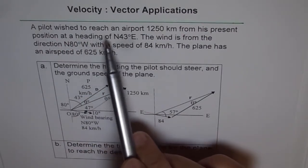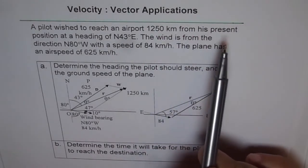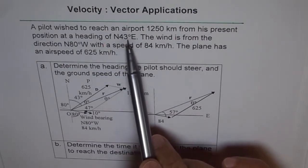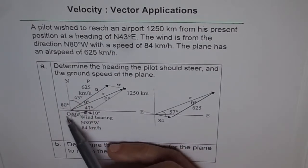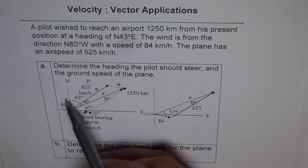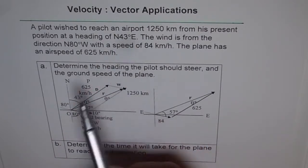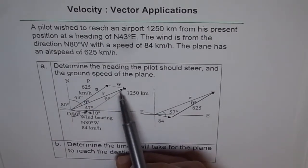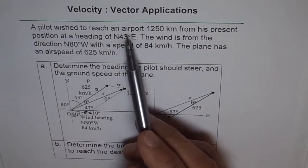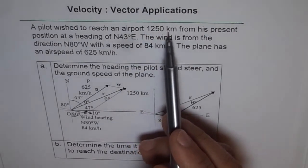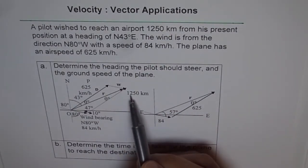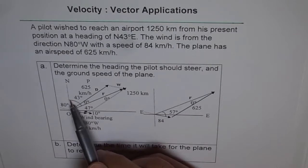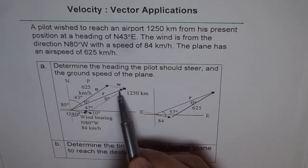A pilot wishes to reach an airport 1250 km from his present position at a heading of 43 degrees east of north. Draw your axis — east, west, north, south. 43 degrees east of north is this angle, and that is the direction in which the airport is. R is the vector, 1250 km is the distance, at 43 degrees east of north.